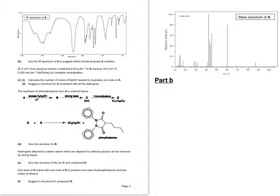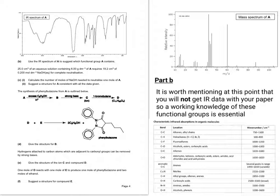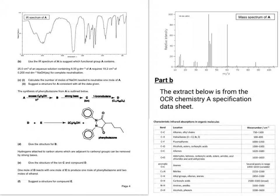So moving on to part B, and notice I've actually taken the mass spectrum and put it onto this page as well, so we can refer to both if we need to. It says, use the IR spectrum of A to suggest which functional group it contains. So it's worth mentioning that you won't get infrared data with your paper, so working knowledge of some of the functional groups are essential. So the extract below is from the OCR Chemistry A specification data sheet. So let's use it to answer question B.